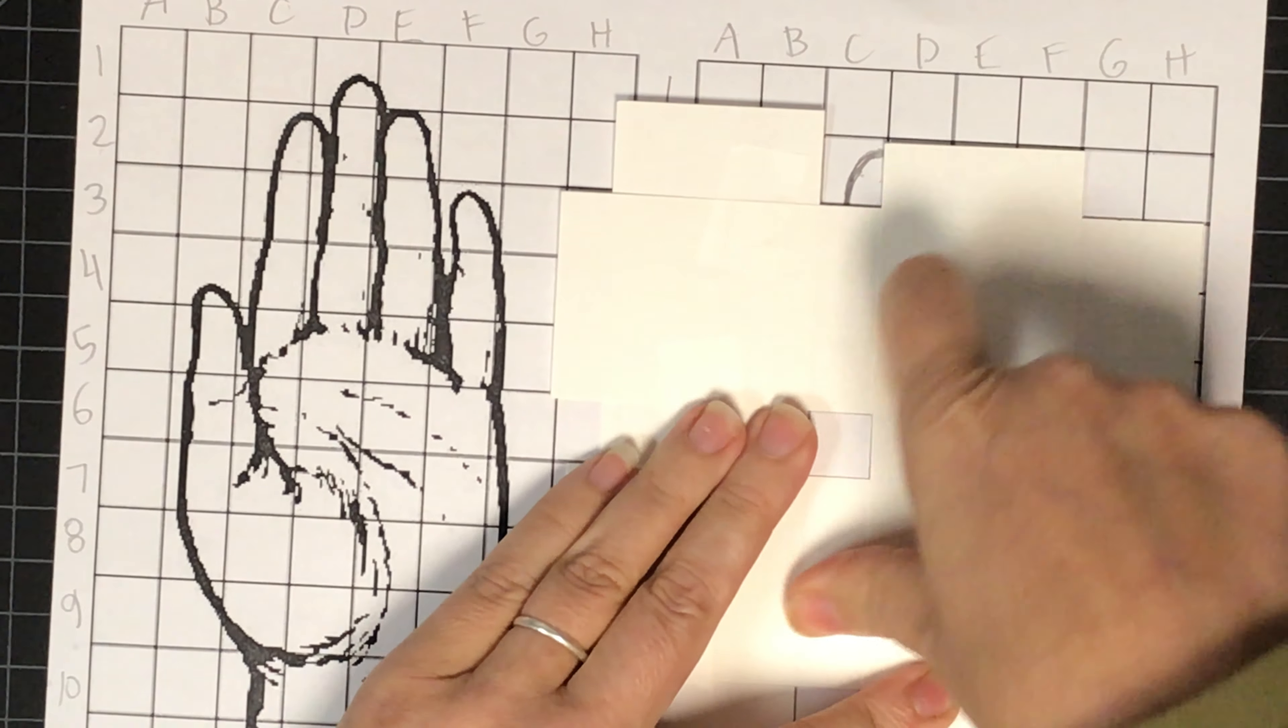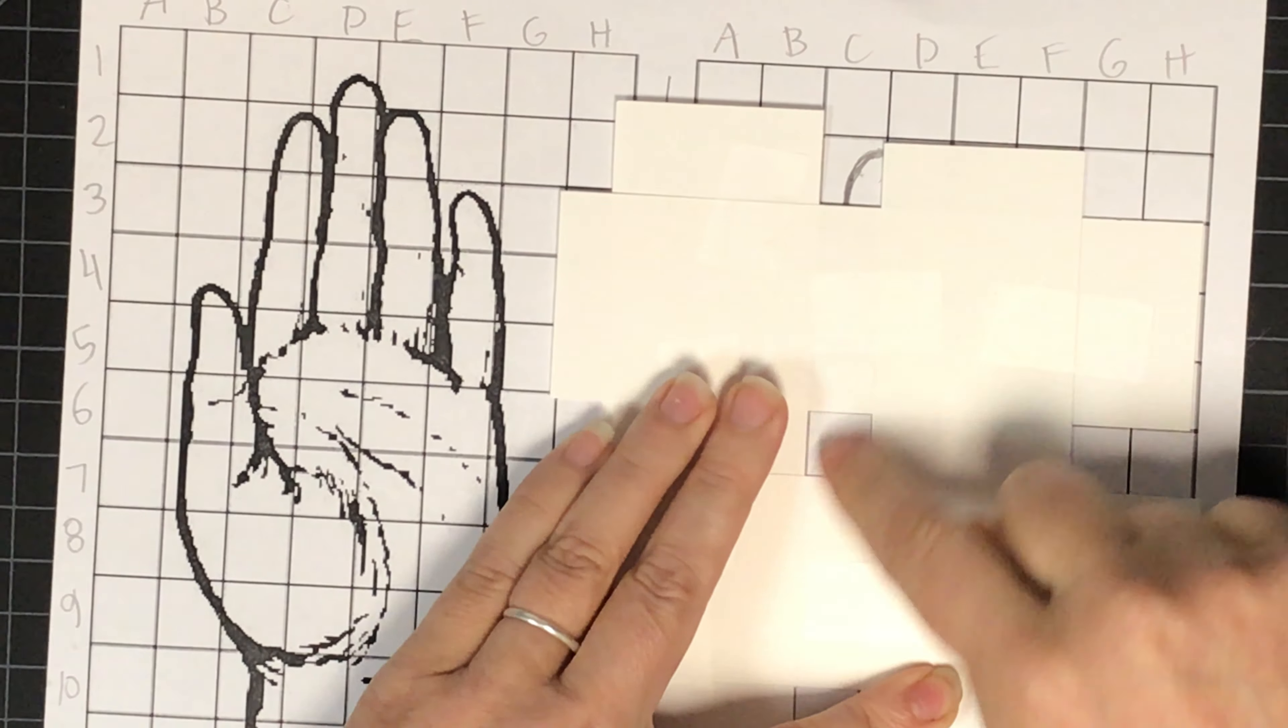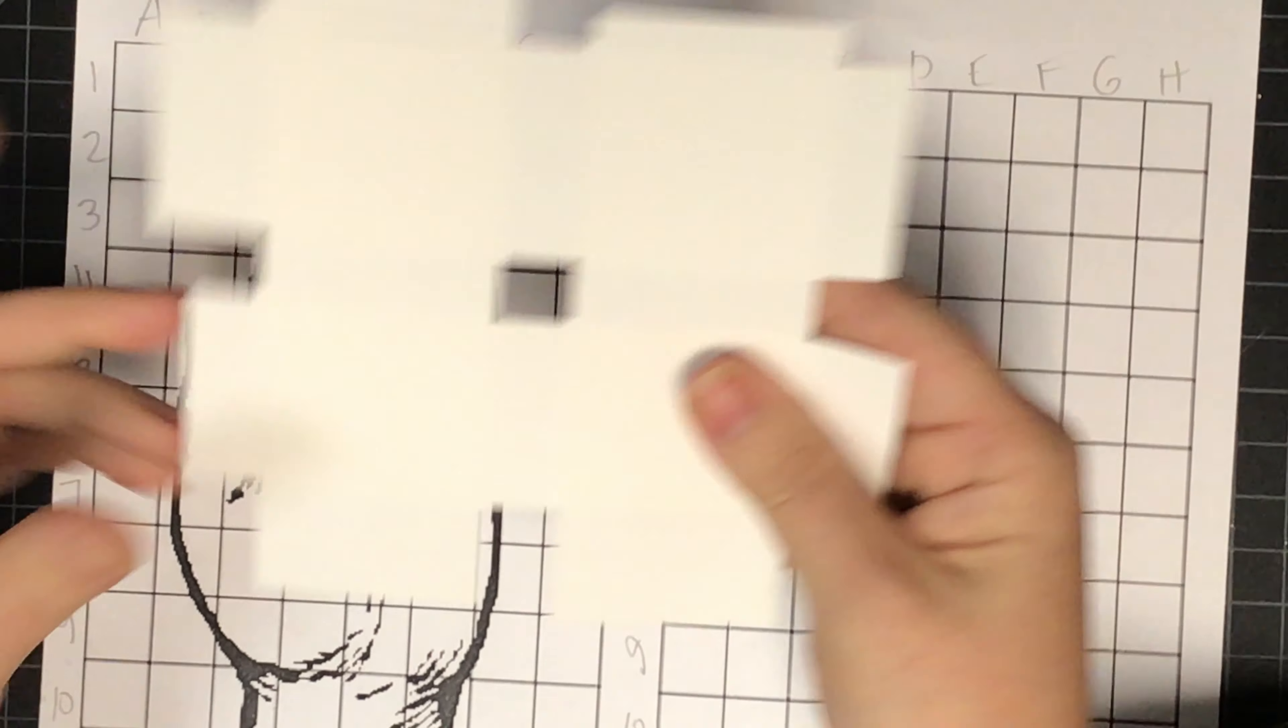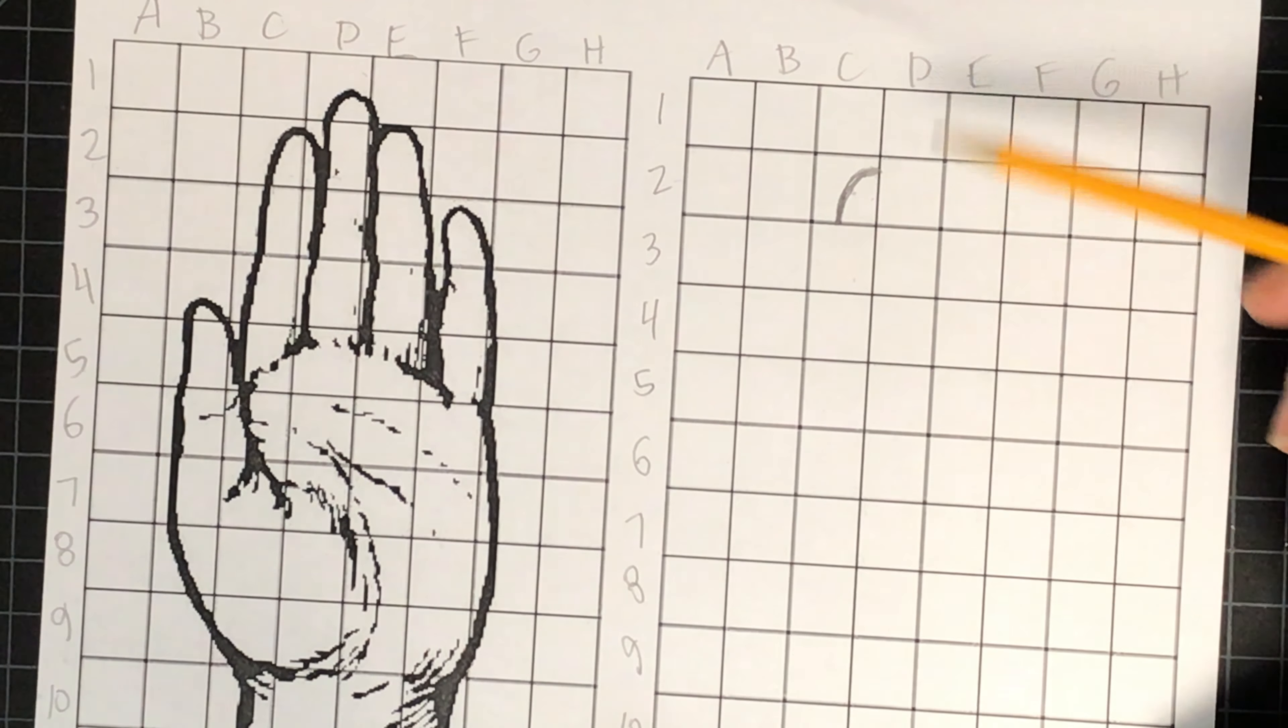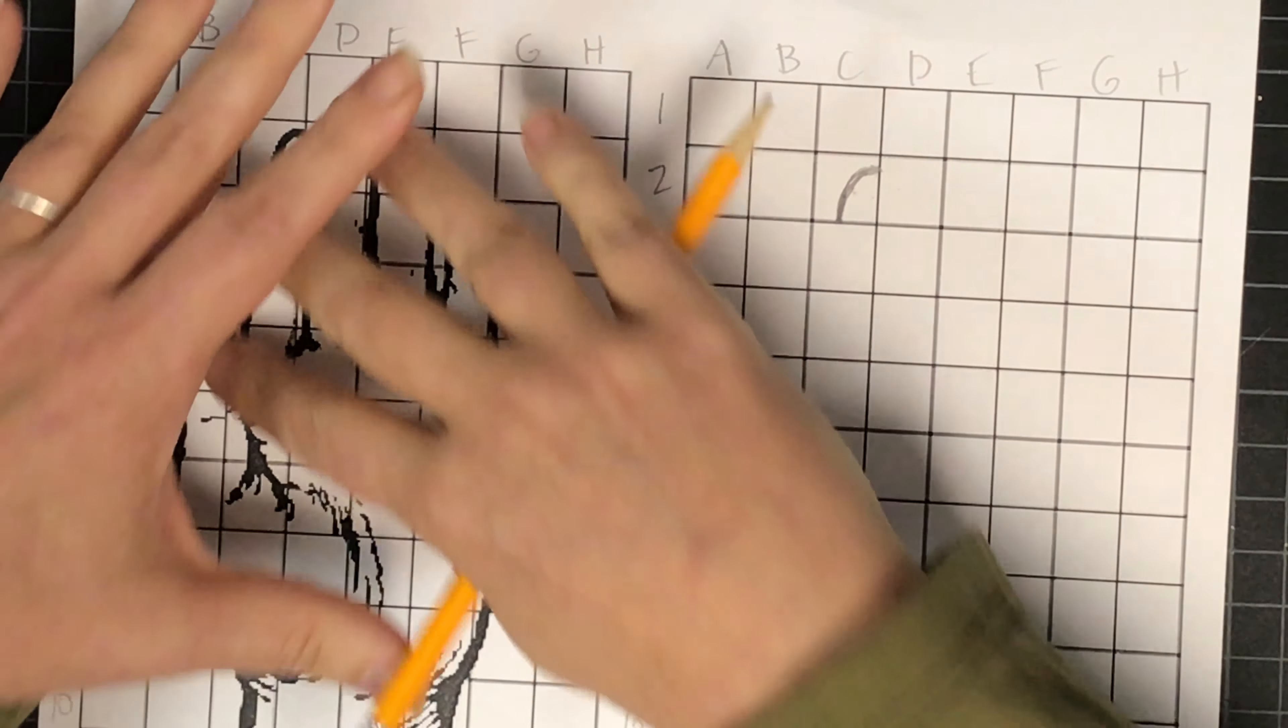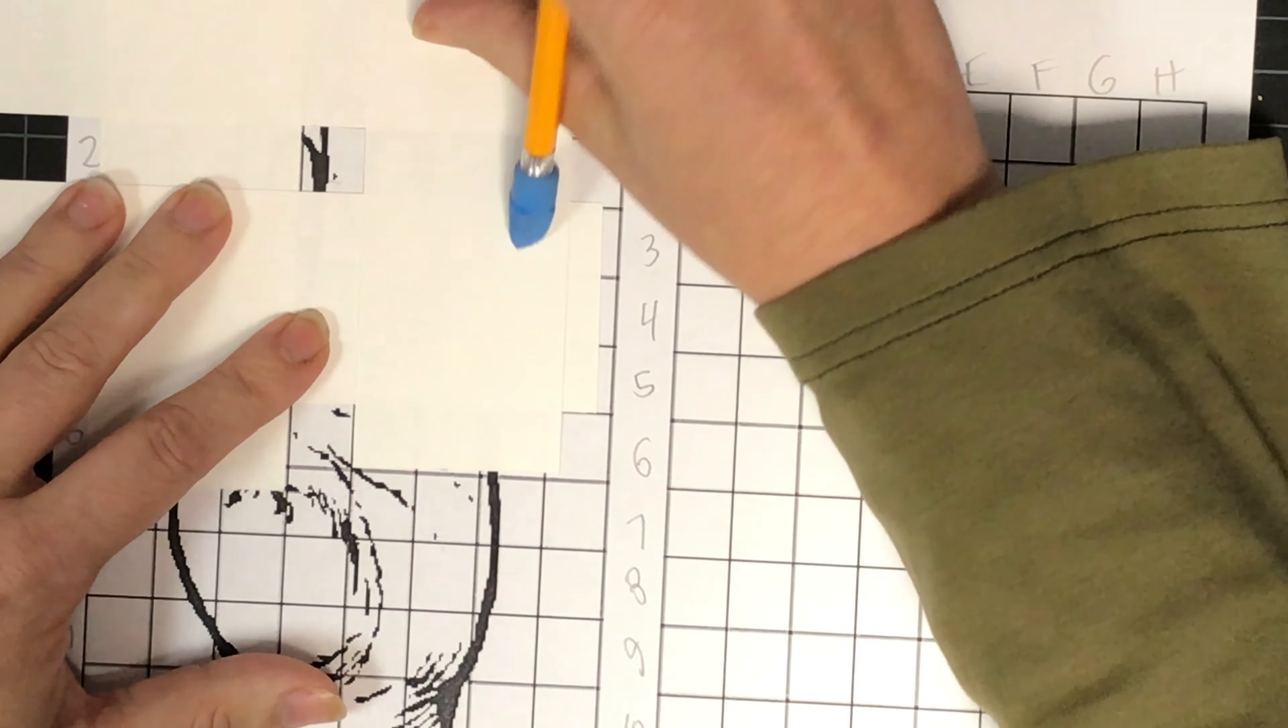This is what you call your viewfinder. It helps block everything out except for what you're trying to view. So this is actually used on the side where you already have the drawing. Let's say we're going to go to D2 right here and draw this. So that you don't get confused, because this is a lot of information, what your viewfinder does is it blocks everything out.